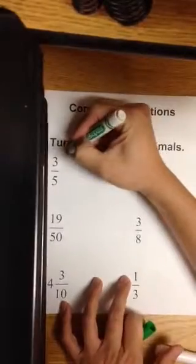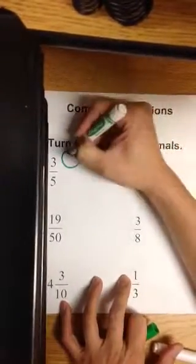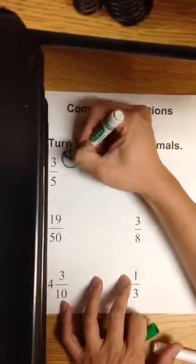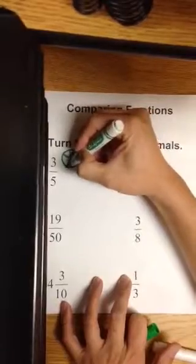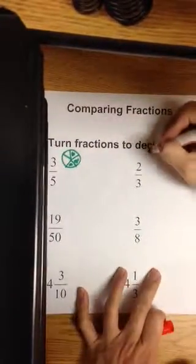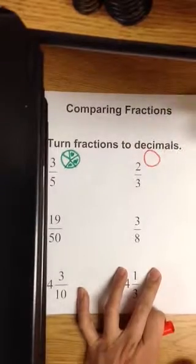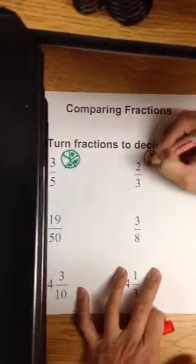If you do the drawing method, I draw a fraction circle, which is one whole. I divide it into five parts. I shade in three of them. One, two, three. In the other one, 2/3, draw a fraction circle, one whole. I cut into three equal parts.